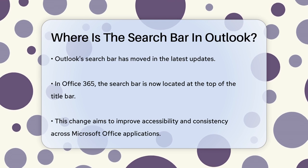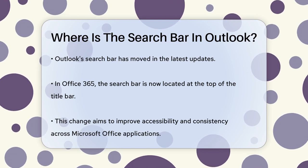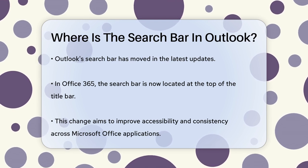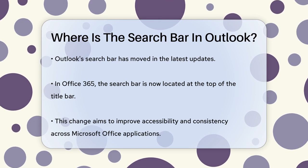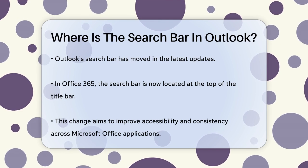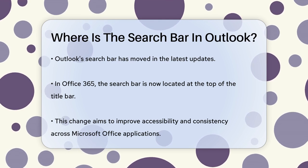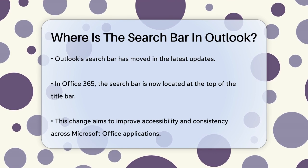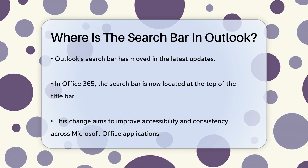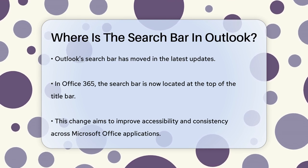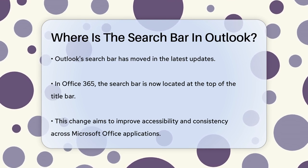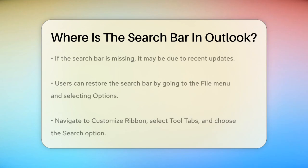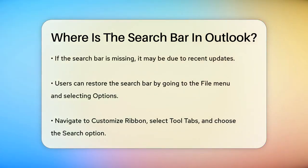Let's start with the latest changes. If you're using the Office 365 version of Outlook, you might have noticed that the search bar is no longer where it used to be. Instead of being at the top of your messages, it's now moved to the top of the title bar. This change happened to make the search function more accessible and to align it with other Microsoft Office applications.